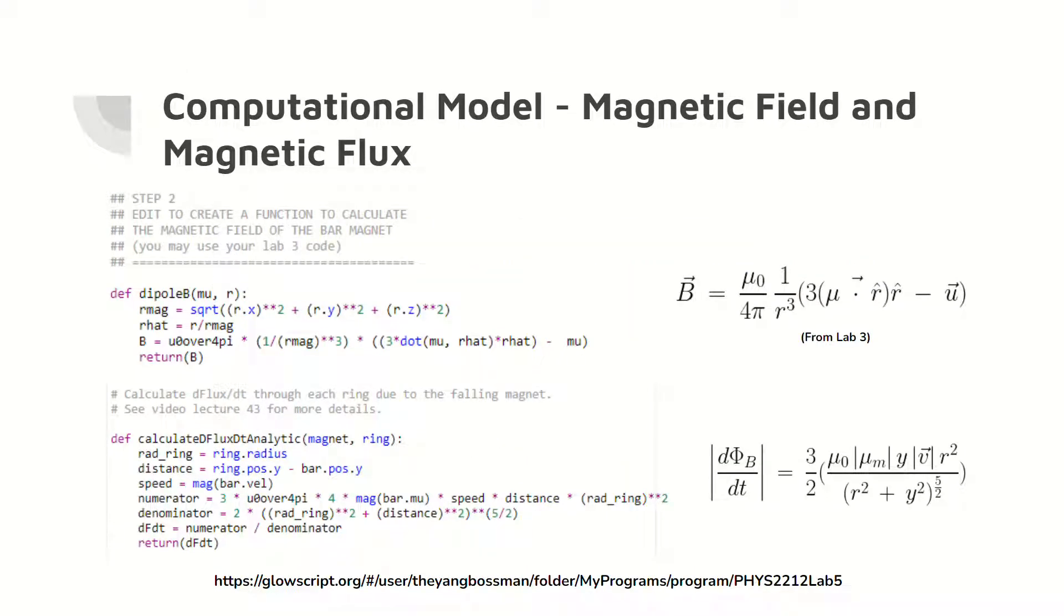Here is the code for calculating the magnetic field and the change in magnetic flux over time, with the respective mathematical equations shown to the right. Note that the general formula for magnetic field and change in magnetic flux are used because these are the most accurate equations.